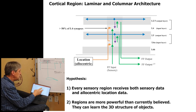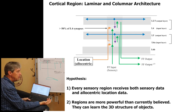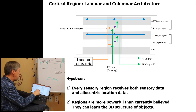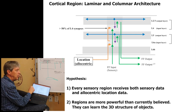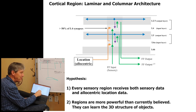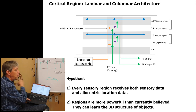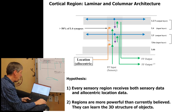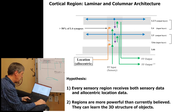Originally you asked where the allocentric location comes from. The main thing is it's coming from elsewhere — it's not coming from this region itself. So where is it coming from? Let's go look at another diagram.